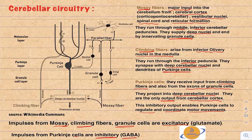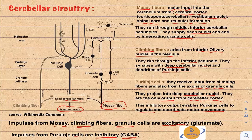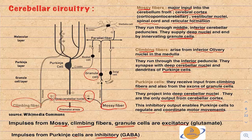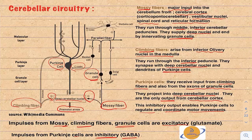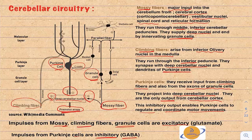Looking at the circuitry diagram: the deep cerebellar nuclei are the major output toward pre-motor areas to control movements. Mossy fibers send excitatory impulses to the deep cerebellar nuclei and then synapse with granule cells. Climbing fibers likewise excite the deep cerebellar nuclei and synapse with Purkinje cells. Granule cells then send impulses to Purkinje cells. Purkinje cells, as the only output from the cerebellar cortex, project inhibitory impulses to the deep cerebellar nuclei — controlling their function and ultimately regulating and coordinating motor movements.